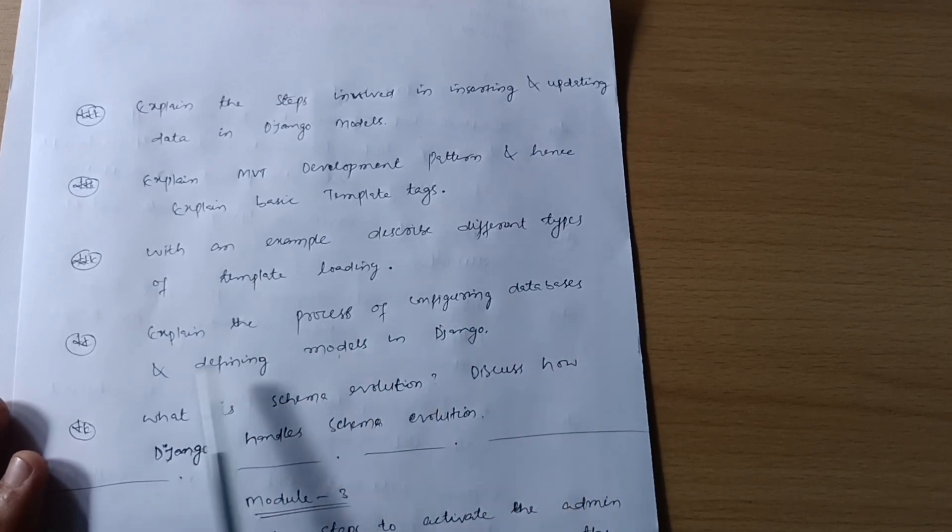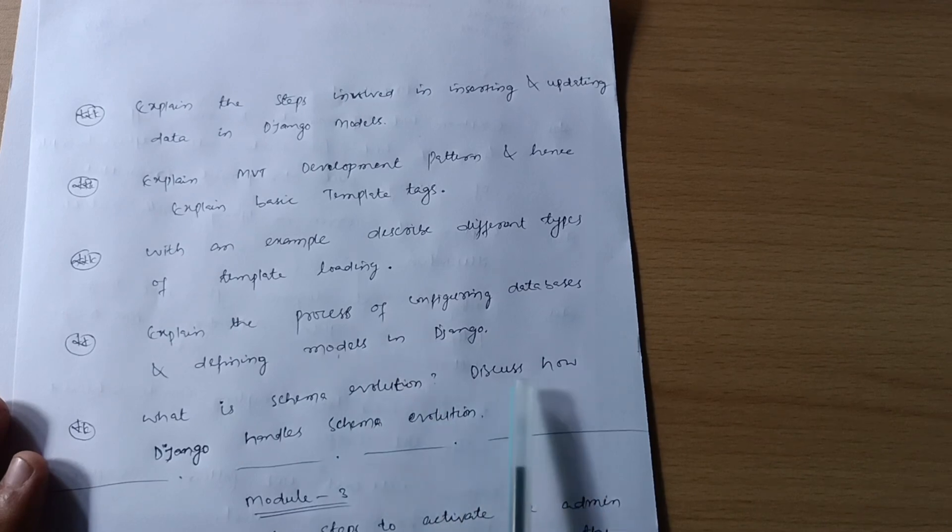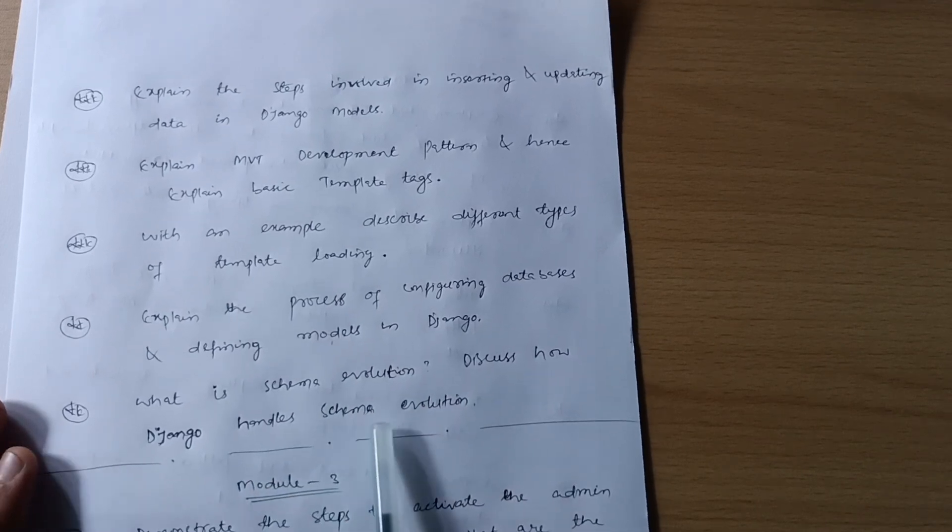Explain the process of configuring databases and defining models in Django. What is schema evolution? Discuss how Django handles schema evolution. This is all about Module 2.